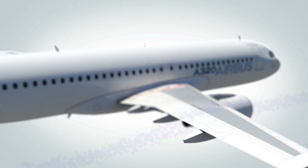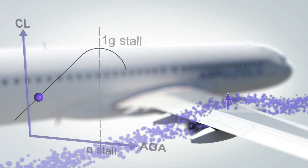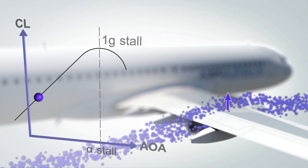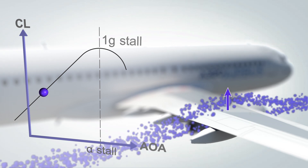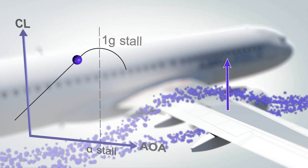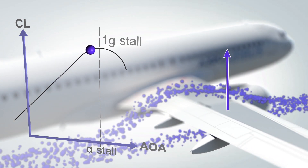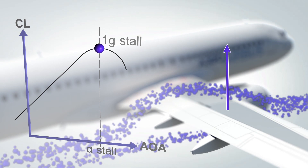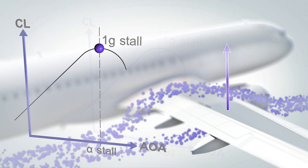As indicated on this illustration, when the angle of attack increases, the lift coefficient also increases, up to a maximum value that defines the angle of attack for the stall. The role of the high angle of attack protection is to prevent the angle of attack reaching this maximum value.